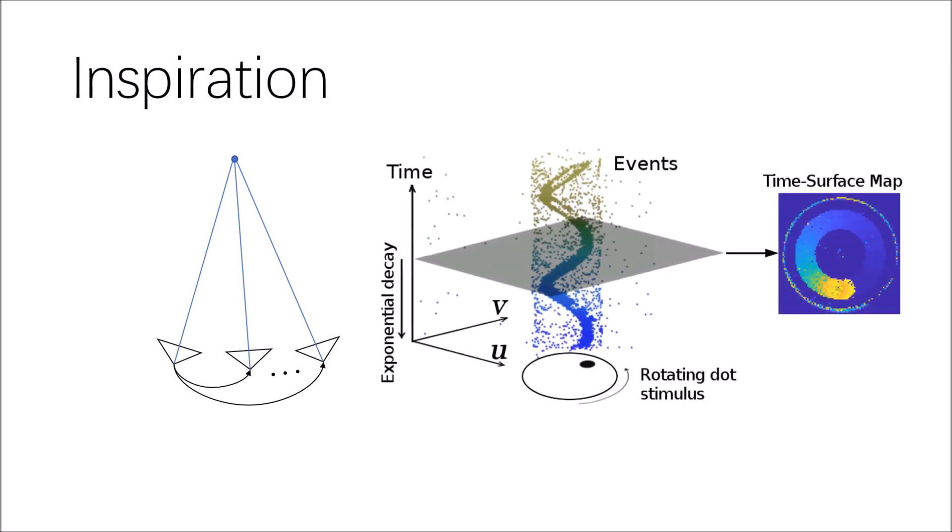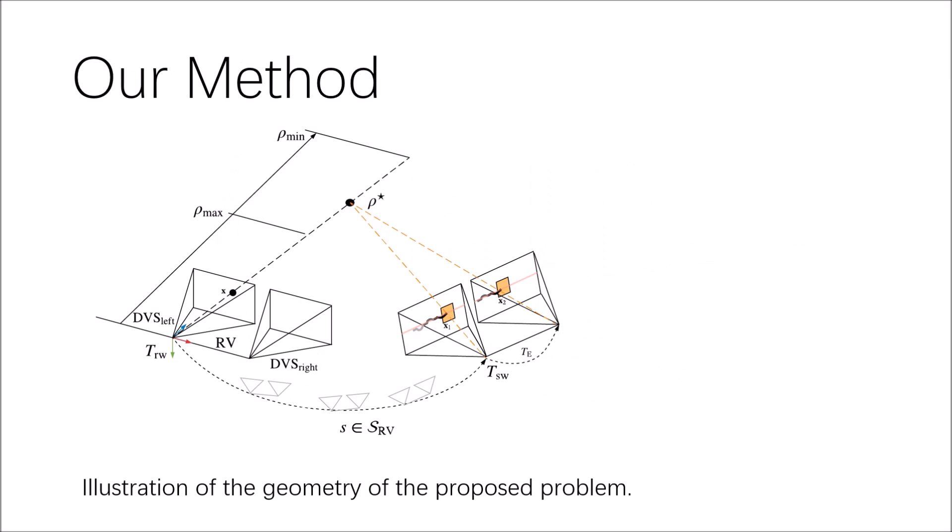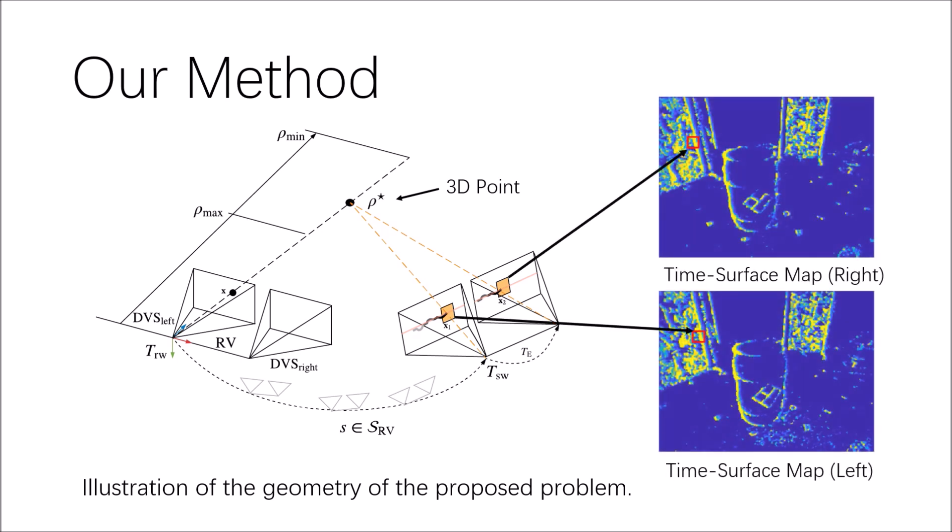Event cameras encode visual information in the form of microsecond resolution timestamps of intensity changes. For a stereo event camera, a detectable 3D point in the overlapping field of view will generate an event on both left and right cameras.